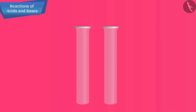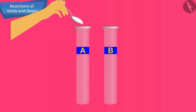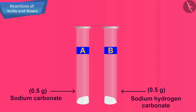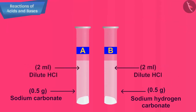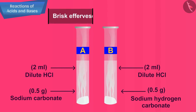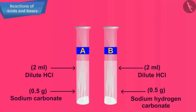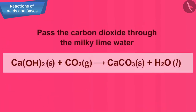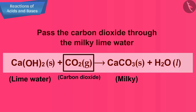Take two test tubes and label them as A and B. Take about 0.5 grams of sodium carbonate Na2CO3 in test tube A and about 0.5 grams of sodium hydrogen carbonate NaHCO3 in test tube B. Add about 2 ml of dilute HCl to both the test tubes. What do you observe? You will observe that brisk effervescence of a gas is produced. Pass the gas produced in each case through lime water, that is calcium hydroxide solution, as shown in the figure and record your observations. You will observe that the lime water turns milky, which shows that the gas evolved is carbon dioxide.